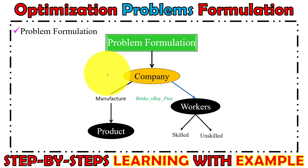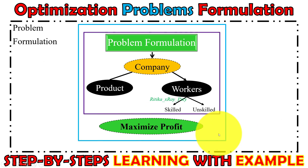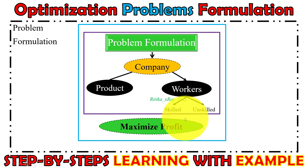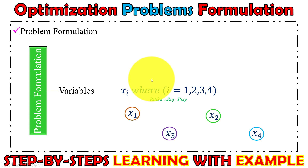Now we'll start the formulation. Here we have a company that manufactures products, two machines, and workers who help in the manufacturing process — skilled and unskilled workers. The company wants to maximize its profit by determining how much worker hours are required and how much each product should be produced each month. First, we will define the design variables.